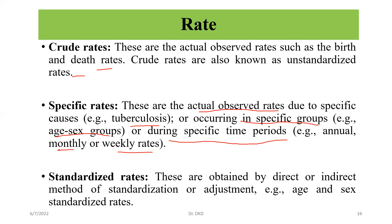So the tools of measurement in epidemiology — rate, ratio, and proportion — are important to understand. We have discussed rate: it requires a numerator, a denominator, and a time specification. We can calculate rate simply from these elements. Thank you.